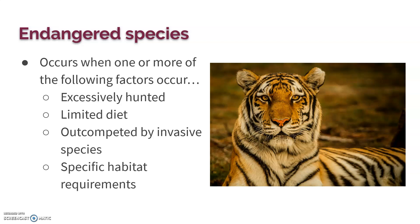A species can become endangered if they've been excessively hunted — maybe there's a product the animal has that is valued by humans, whether for food, medicinal purposes, superstition, or fashion. A limited diet is also a factor: if they depend on a certain food source and something happens to that source, they're at risk. They're also at risk if out-competed by invasive species.